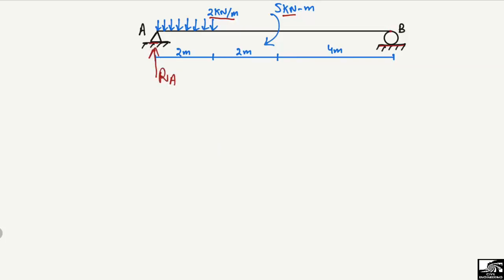To analyze this beam, we assume support reactions at A and B. Since it is a hinge support, it can take vertical and horizontal reactions. The reaction provided by support B is R_B. To find R_A and R_B, we use the equilibrium equations.